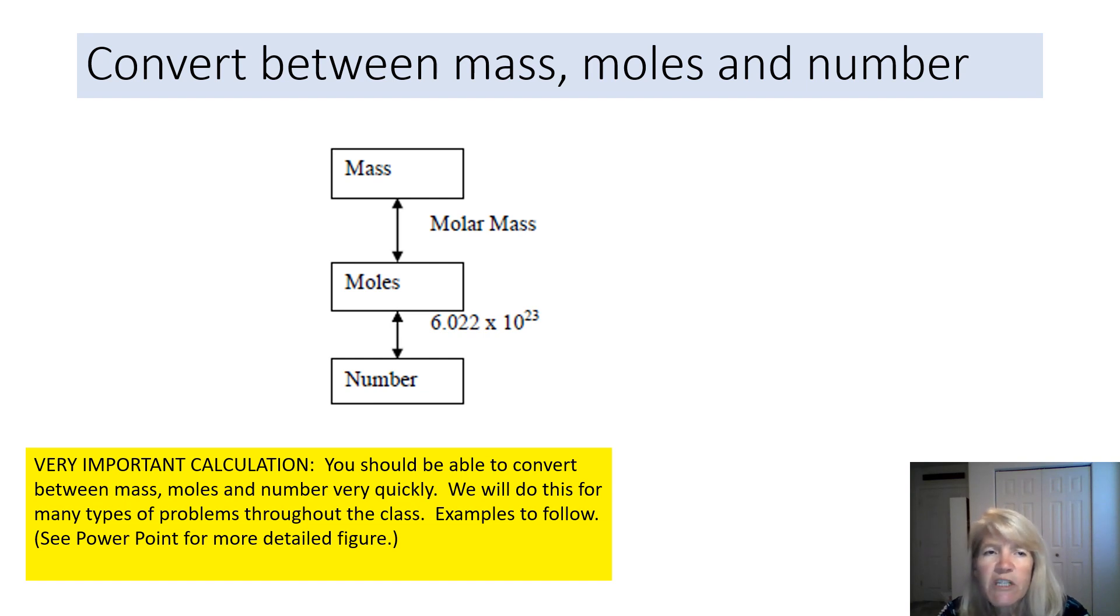So an important conversion we're going to do is go from mass to moles to numbers. And it's really important that you be able to master this calculation. We're going to use it in many different types of problems. And the way you do it, going from mass to moles, you use the molar mass. And if you have the mass and you want the moles, you divide by the molar mass. If you have the moles and you want the mass, you multiply by the molar mass. So your conversion factor is molar mass. Molar mass has units of grams per mole. So you can see how that would convert between grams and moles.